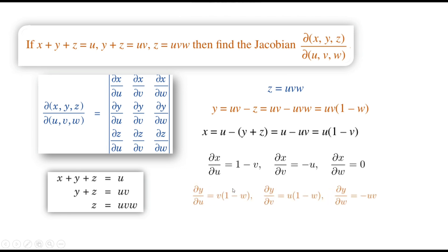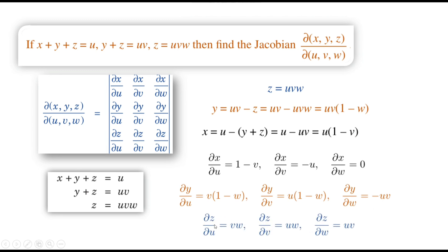For y equals uv(1 minus w): ∂y/∂u equals v(1 minus w), ∂y/∂v equals u(1 minus w), and ∂y/∂w equals negative uv. For z equals uvw: ∂z/∂u equals vw, ∂z/∂v equals uw, and ∂z/∂w equals uv. Here, to find partial derivatives with respect to one variable, all other variables are treated as constants.